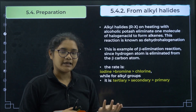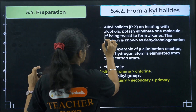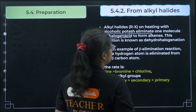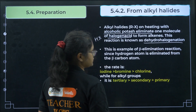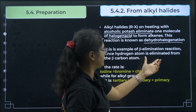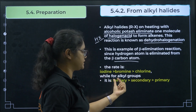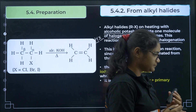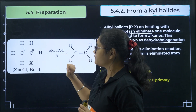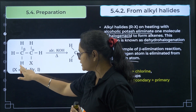Second method: from alkyl halides. Alkyl halides, on heating with alcoholic potassium hydroxide (alc. KOH), lose one molecule of halogen acid (HX) to form alkenes. This reaction is known as dehydrohalogenation — you remove one hydrogen and one halogen. It is an example of beta-elimination because the hydrogen is eliminated from the beta carbon. The rate follows: I > Br > Cl, and for the alkyl group: tertiary > secondary > primary.